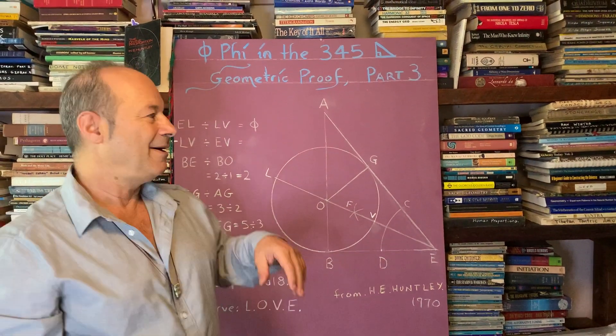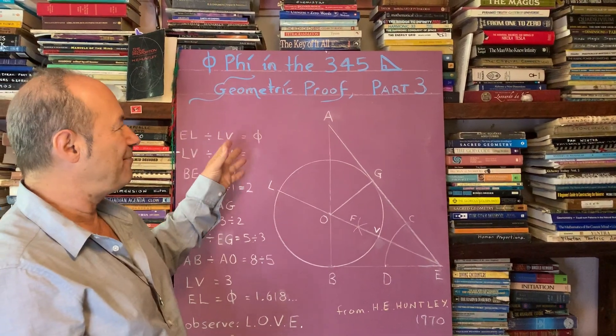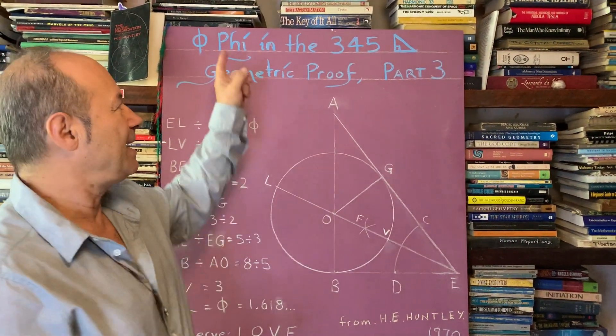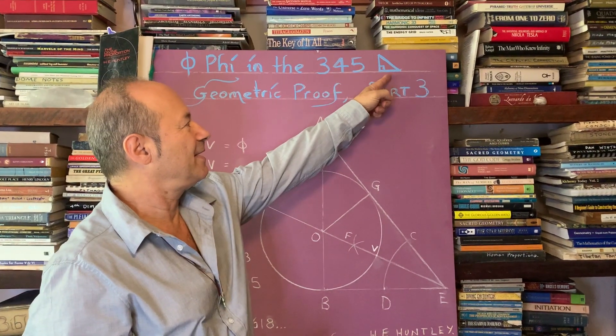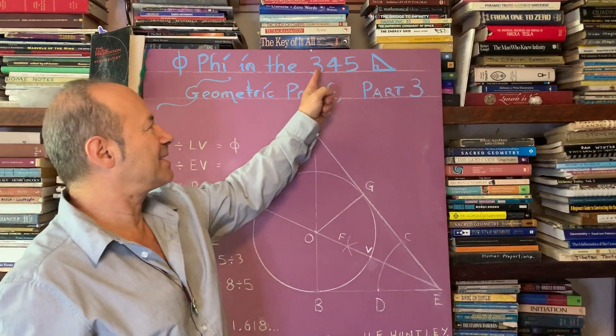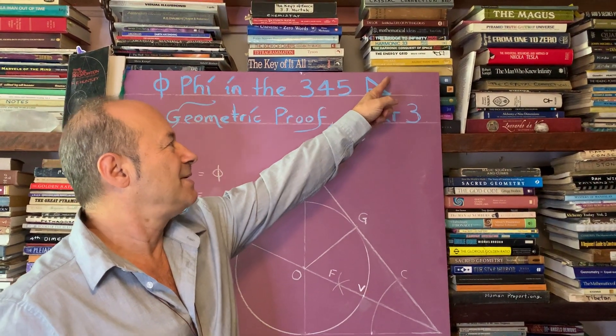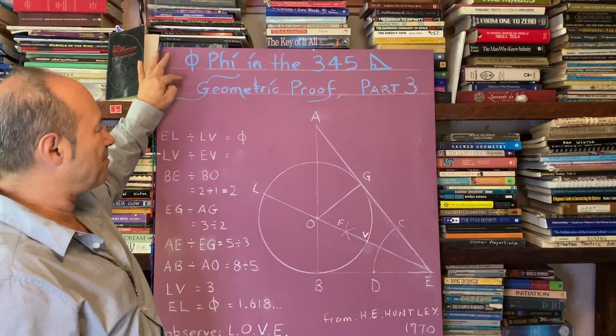This is part three of a series on an information geometric proof of how to establish the golden ratio in the 3-4-5 triangle. That's the symbol for the 3-4-5 triangle. It's not actually 345, it's three parts to four parts to five parts.